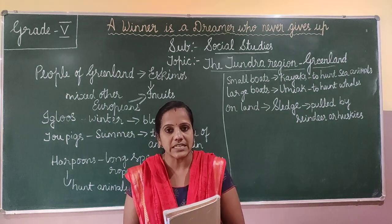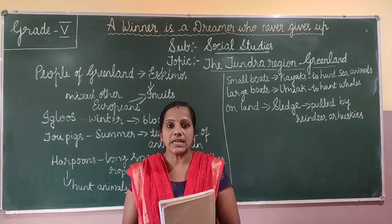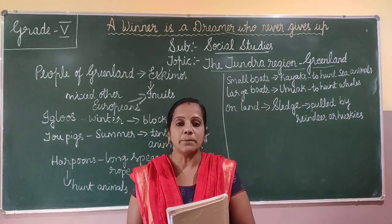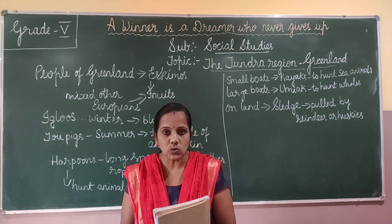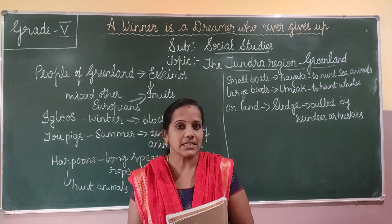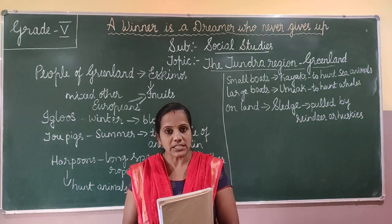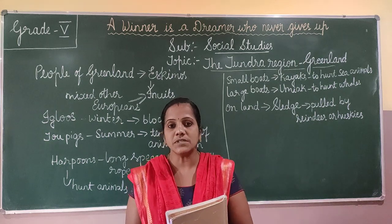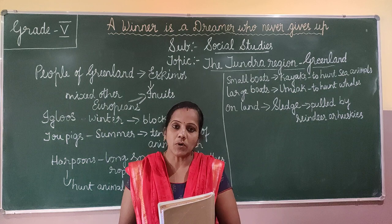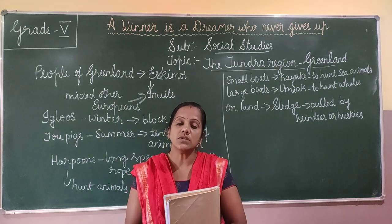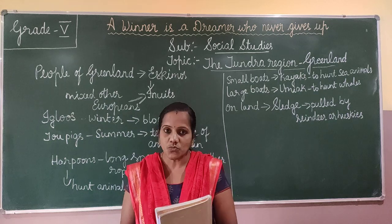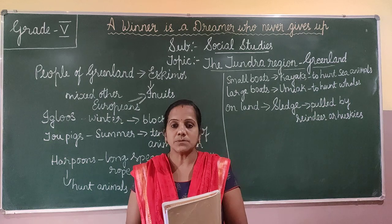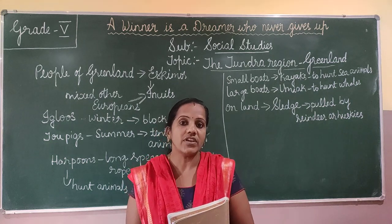These icebergs are very dangerous for the ships. Only 10% of the iceberg is above the sea and the rest 90% is below the sea. So it is dangerous for ships sailing on the sea because these icebergs are not visible due to the heavy fog.